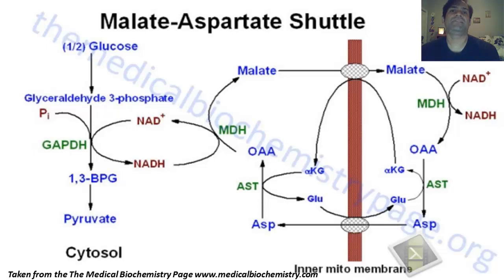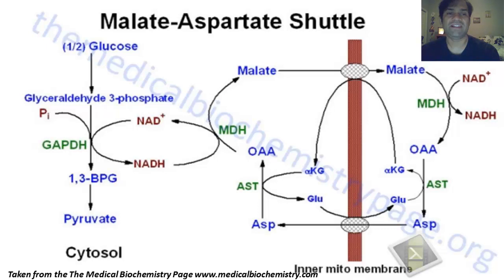Let's study the malate-aspartate shuttle. The malate-aspartate shuttle provides a link between glycolysis and the TCA cycle.